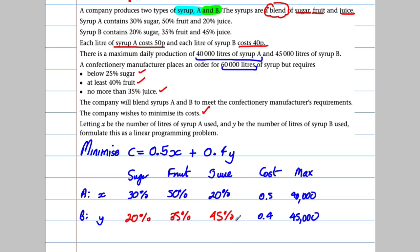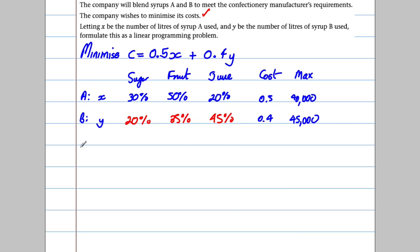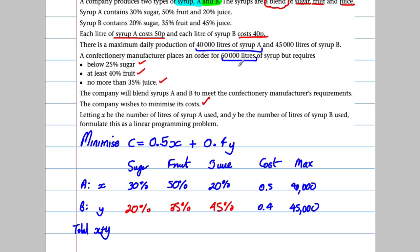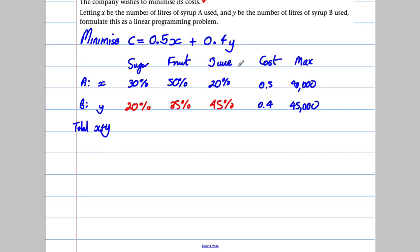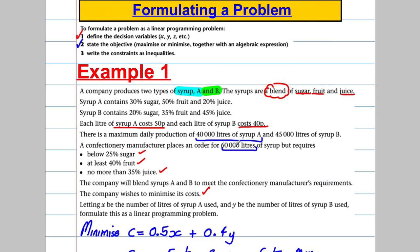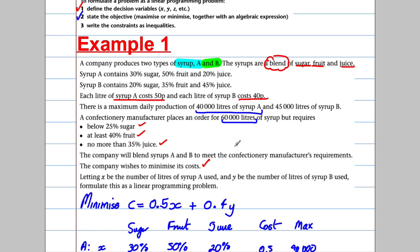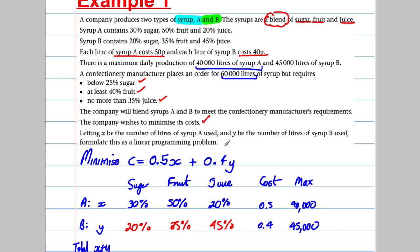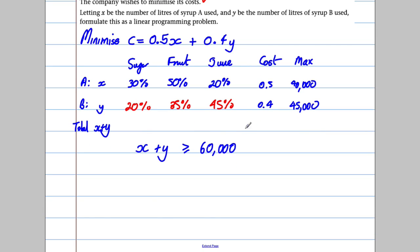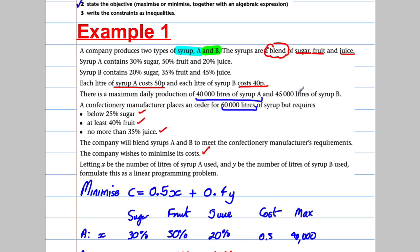The first constraint is that the total amount of syrup x + y must meet the order, so x + y ≥ 60,000. There's also a maximum daily production of 40,000 litres of syrup A, so x ≤ 40,000.